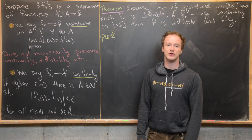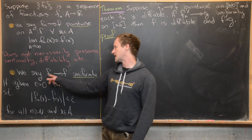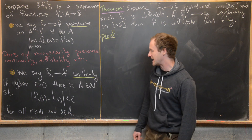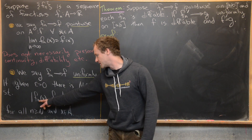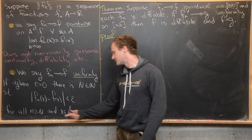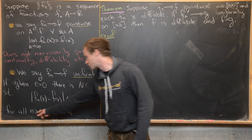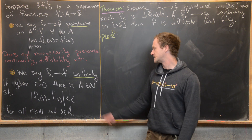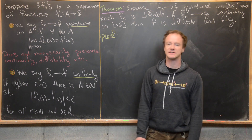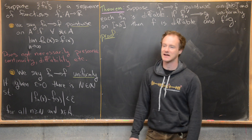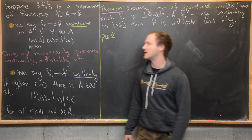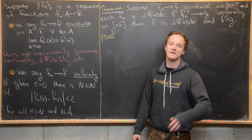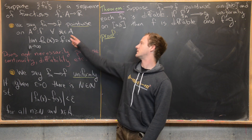We also looked at uniform convergence. We say f_n converges to f uniformly if, given epsilon greater than zero, there is a natural number N such that the absolute value of f_n(x) minus f(x) is less than epsilon for all n greater than or equal to N and all x in A. The key point is that this capital N was chosen before any mention of x, so N depends on epsilon but not on x — unlike in the pointwise definition.